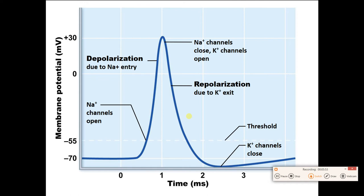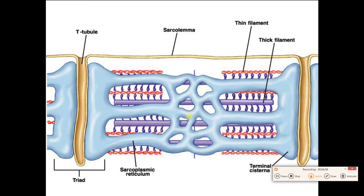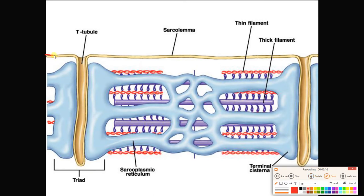We know the muscle cell has an action potential. The action potential that we generated is going to be traveling along the sarcolemma. What's really important to note is that the muscle cell had these passageways through it called transverse tubules or T-tubules, and the action potential actually goes down the T-tubule because that's where the membrane is — action potentials go along the membrane.